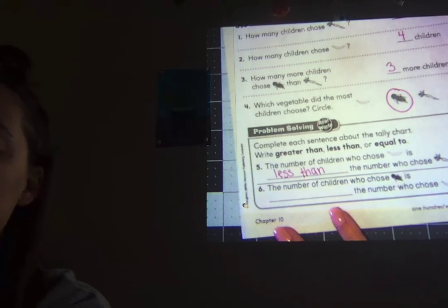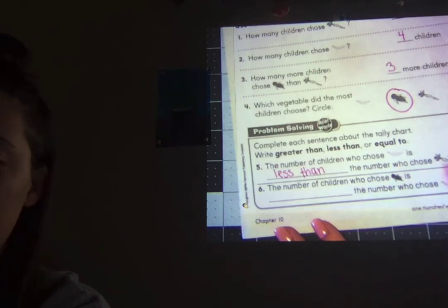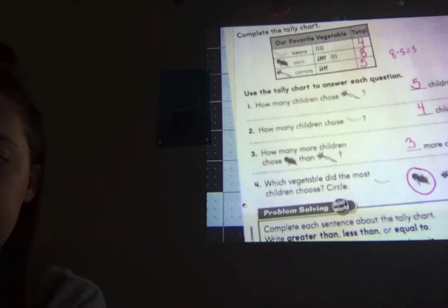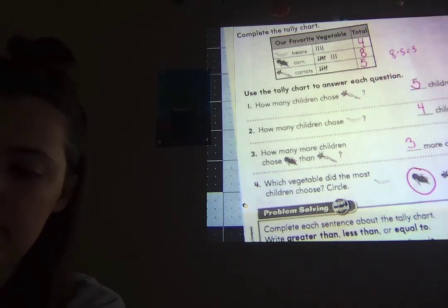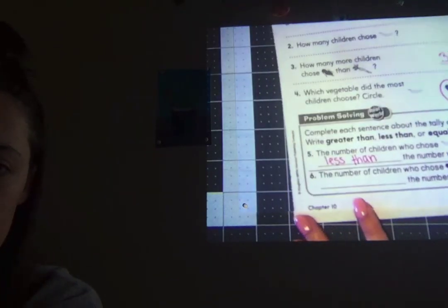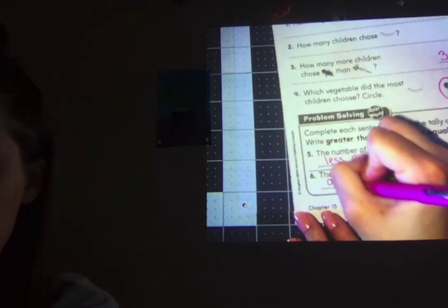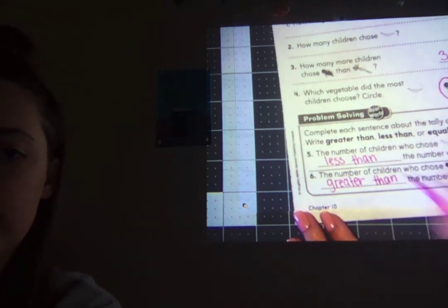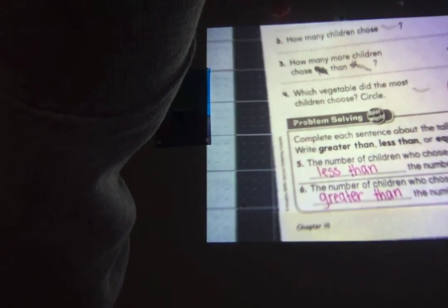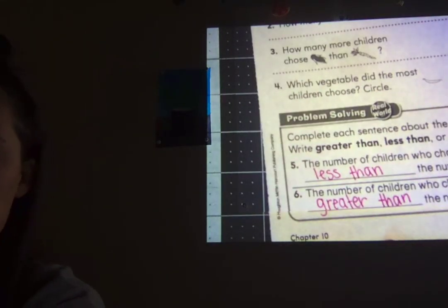Okay, last one. The number of children who chose corn is blank, the number who chose beans. Okay, so we have, looking back up at our chart, we have eight kids chose corn, and four chose beans. So eight is greater than four, less than four, or equal to four. Should have said greater than. Eight is greater than four. Go ahead and pause the video if you need to write that down. On numbers five and six. On page 187.